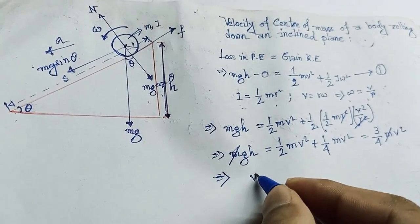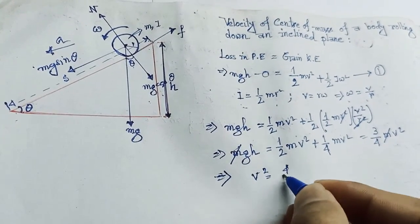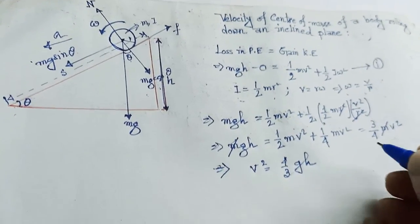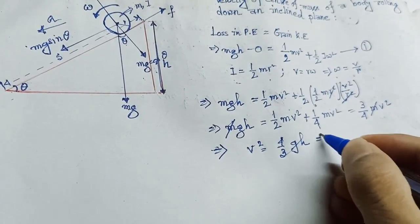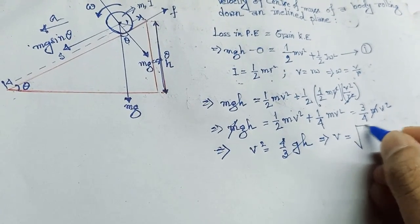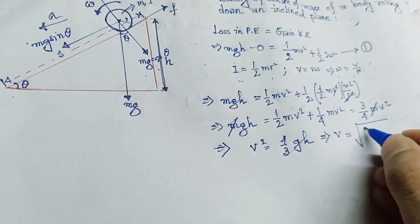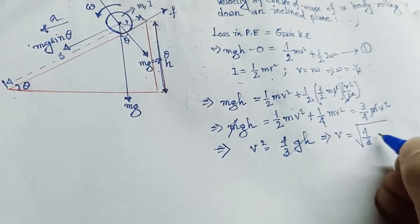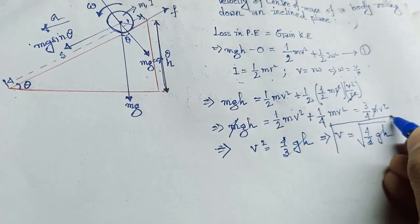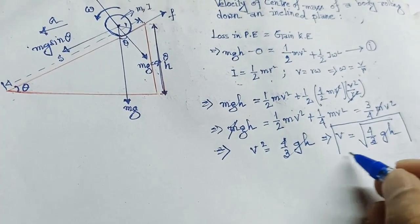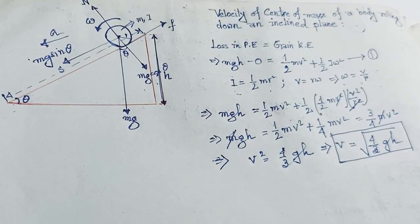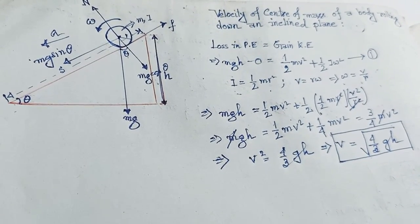After canceling the mass term, we get v squared equals 4 divided by 3 times gh. Therefore, the velocity of the center of mass of the body is v equals the square root of 4gh divided by 3. In this way we can find the velocity of center of mass of an object rolling down an inclined plane.